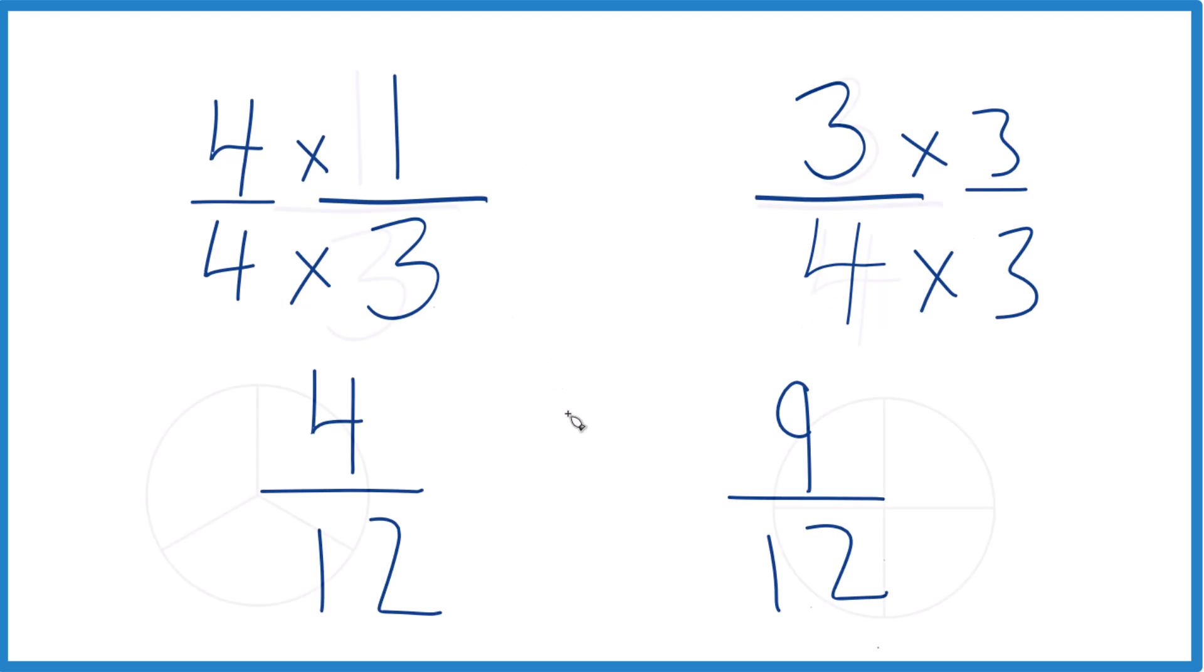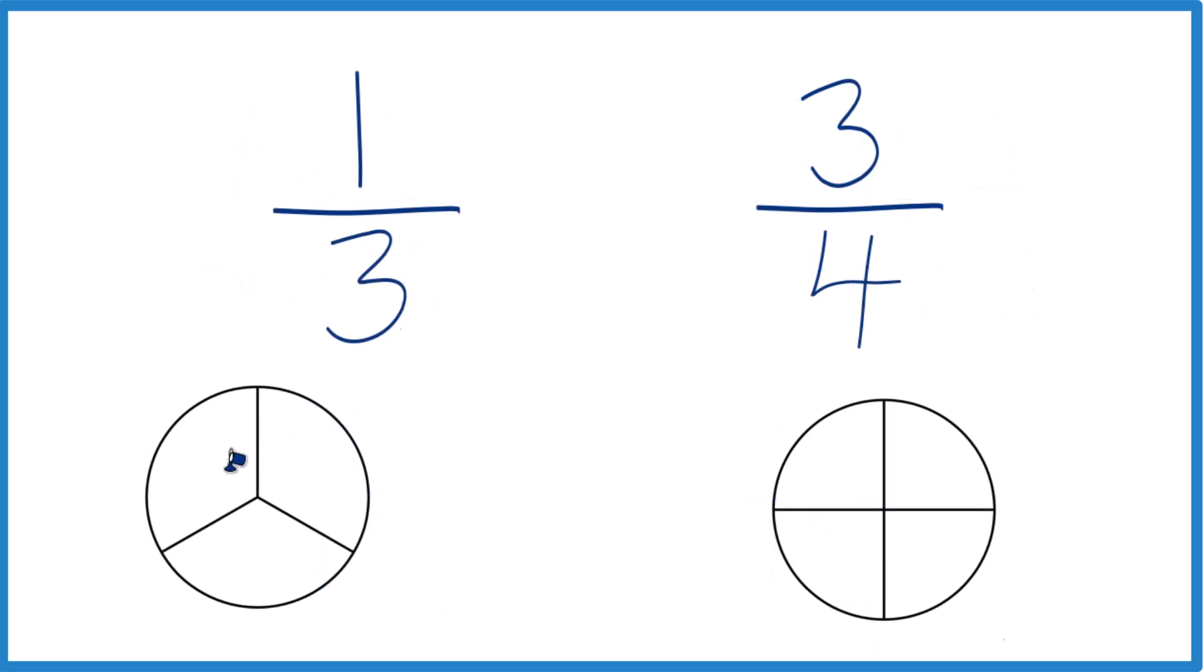One last way we could do this. So here would be one-third of a cup. One part out of three. Over here, three-fourths. Three parts: one-fourth, two-fourths, three-fourths.